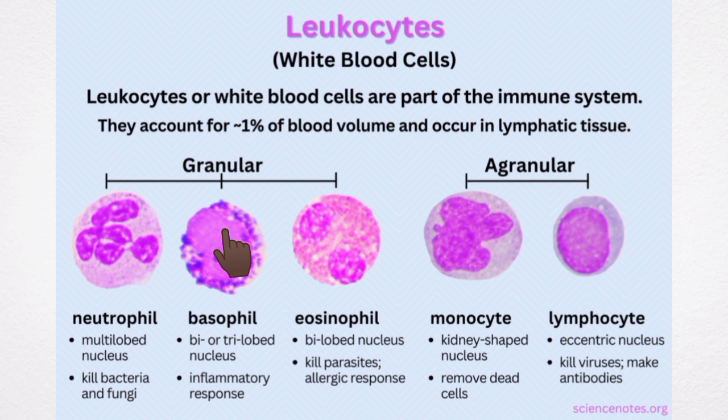Basophils also have coarse granules in the cytoplasm. The granules stain purple-blue with methylene blue. They have a bilobed nucleus and the diameter of the cell is between 8 to 10 microns.